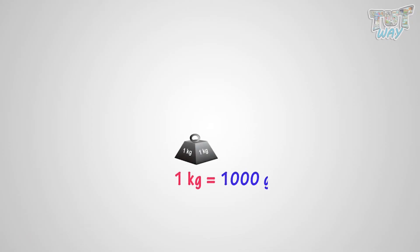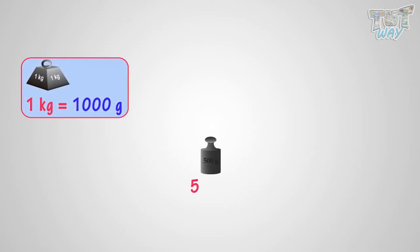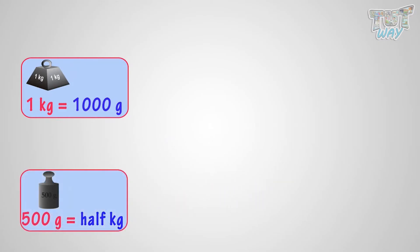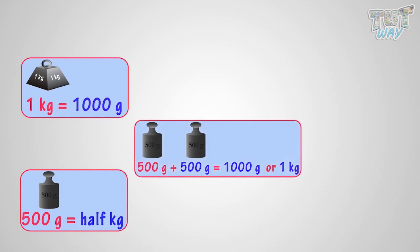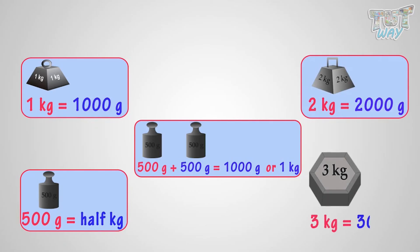One kilogram is 1,000 grams. 500 grams is half kg. 500 grams plus 500 grams will be 1,000 grams or 1 kilogram. 2 kilograms is 2,000 grams. 3 kilograms is 3,000 grams.